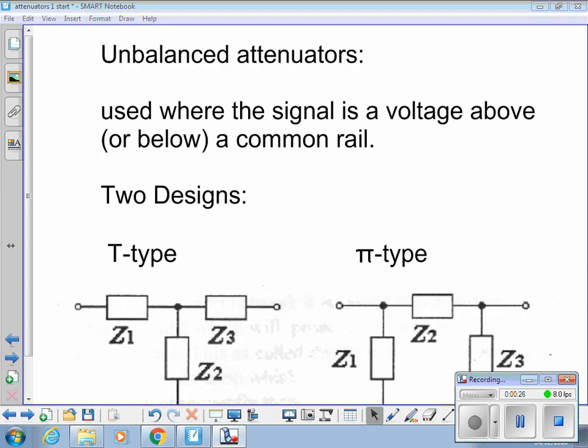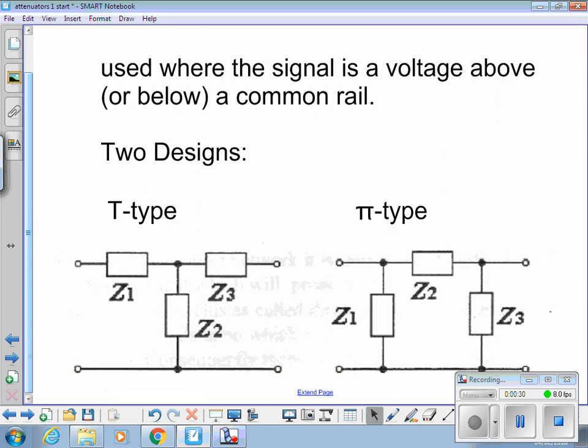It is possible to have attenuators that have different input and output impedances. So you could have one that's got an input impedance of 50 ohms, output impedance of 60, or an input of 50 and an output of 600.